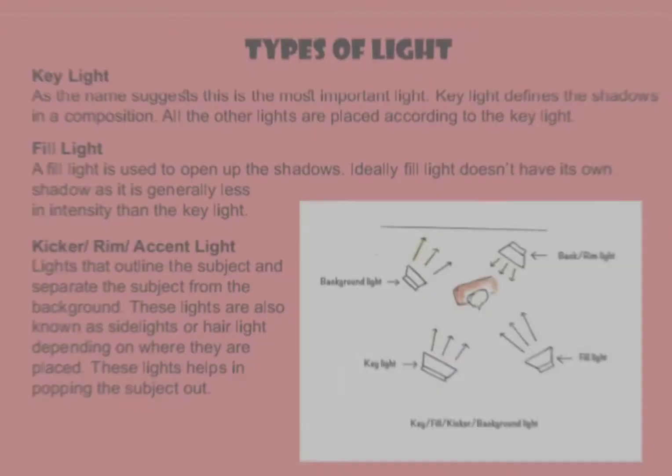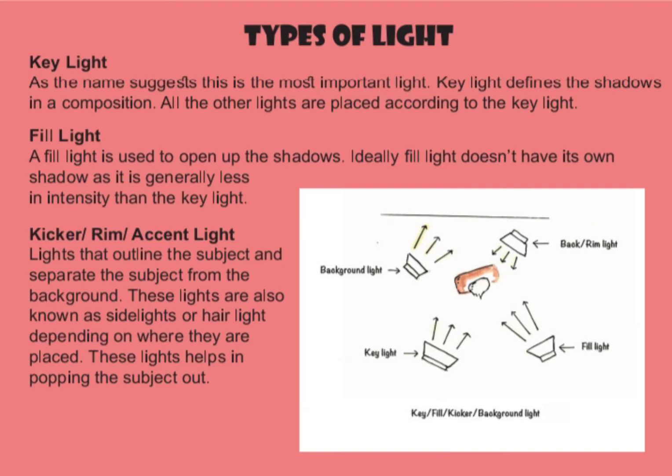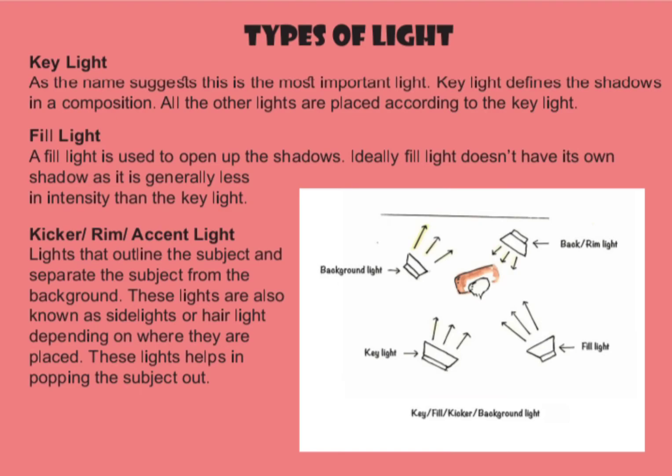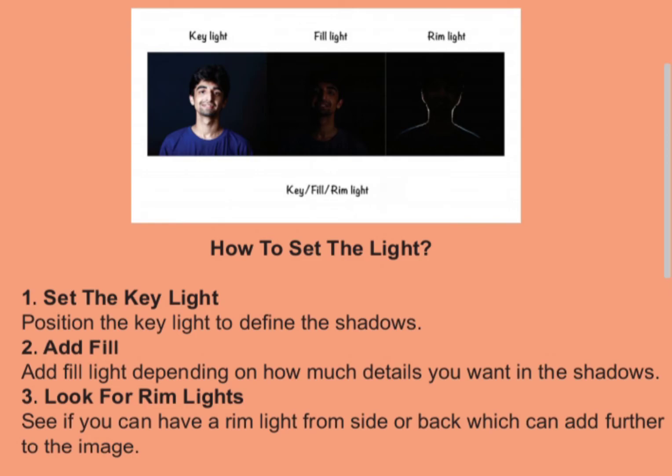There are three types of light. First, the key light — as the name suggests, this is the most important light. Second, the fill light — used to open up the shadows. Third, the kicker, rim, or accent light — lights that outline the subject and separate it from the background, also known as side lights or hair lights depending on where they are placed.